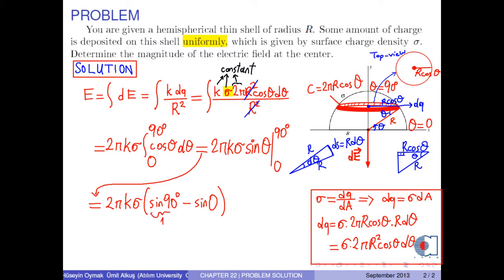Here, sine 90 degrees is 1 and sine 0 is 0. As a result, we obtain the electric field at the center as E equals 2 pi k times sigma.